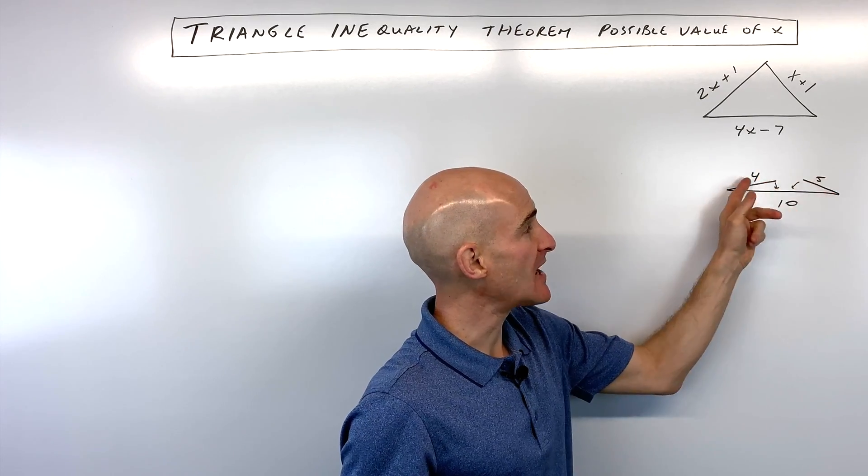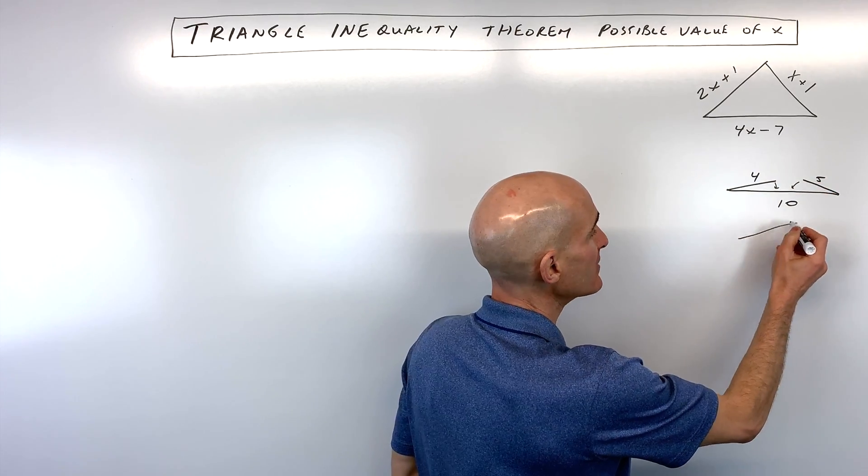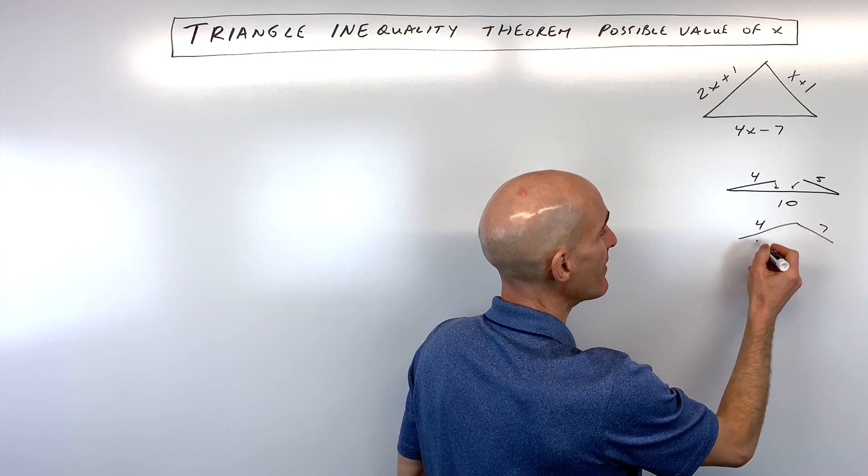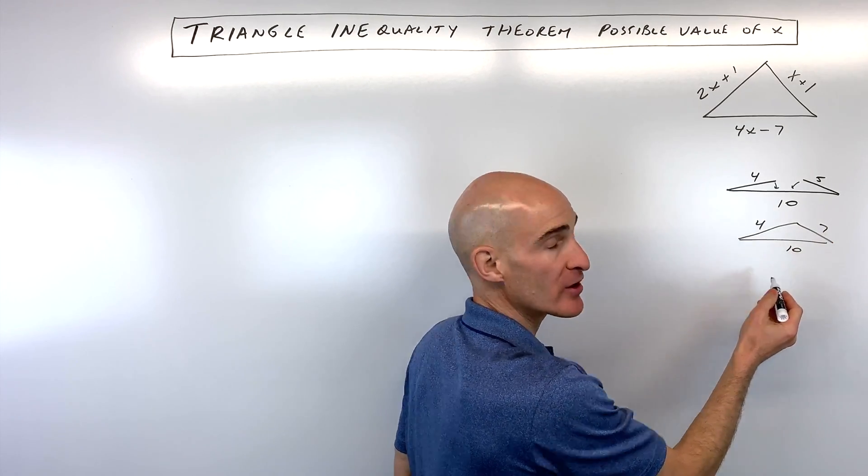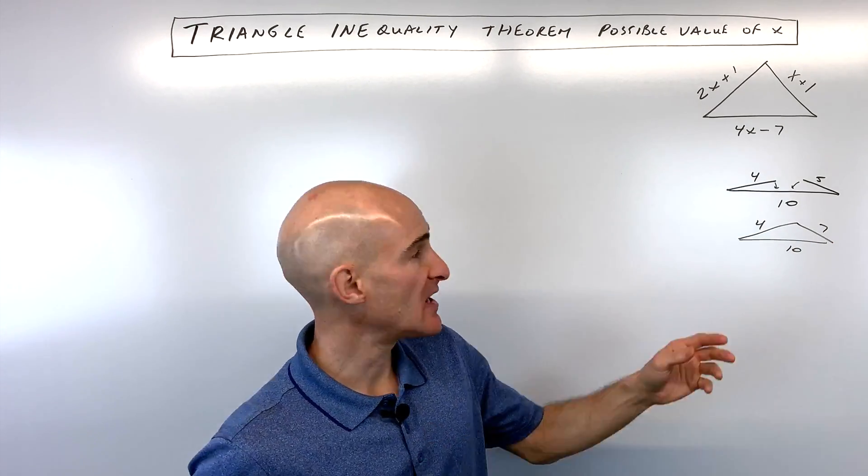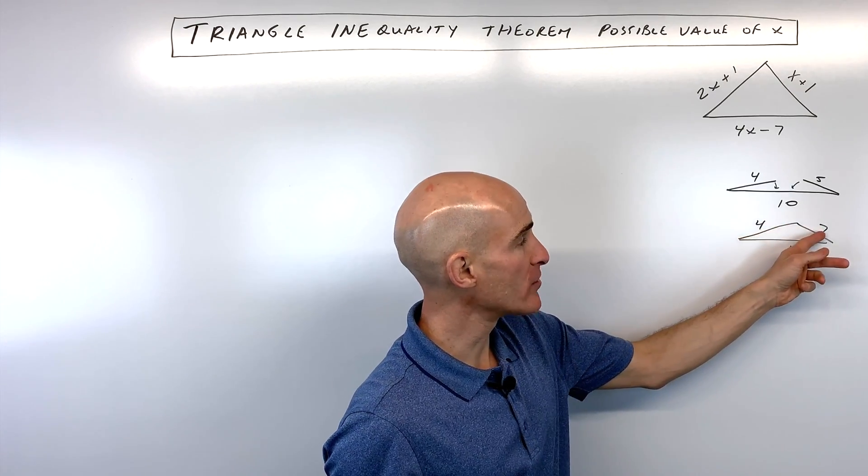So any two sides have to actually be greater. If we had a triangle like this where this is four and say this is seven and this is ten, now I can see four plus seven is eleven, that's greater than ten. So any of the two sides, the sum of the two sides, has to be more than the third side.